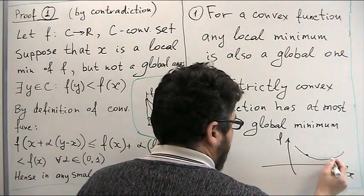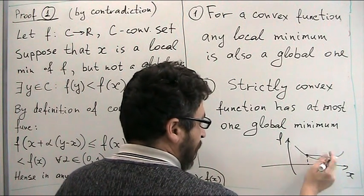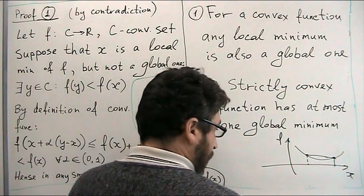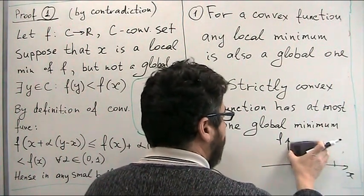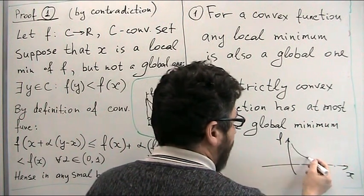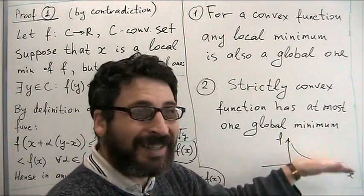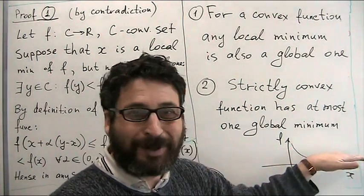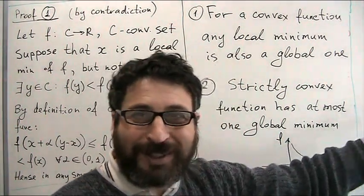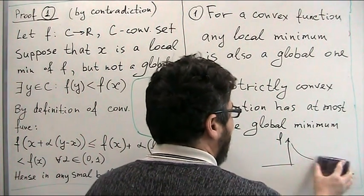A strictly convex function should be strictly below a linear function between any two points. This gives us the intuition that the minimum cannot be flat. On the other hand, I can easily draw a strictly convex function which doesn't have a minimum at all — for example, the function 1 over x. It decreases at every point, it has an infimum, a lower bound, but it has no concrete x which is the minimizer. That would be infinity, but we don't consider infinity as a point which minimizes.